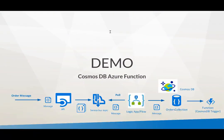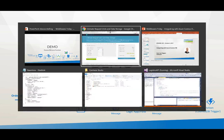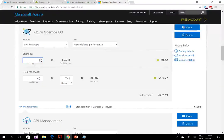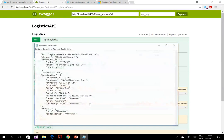Let's have a demo. I'll walk through this and touch upon integration with Cosmos DB. An order message goes to an API, the API pushes it to a service bus topic, which is listened to by a Logic App that uses the Cosmos DB connector to insert that document into a collection. I already have this API running and I'm going to upload this document and push it — now that's being sent to that service bus topic.